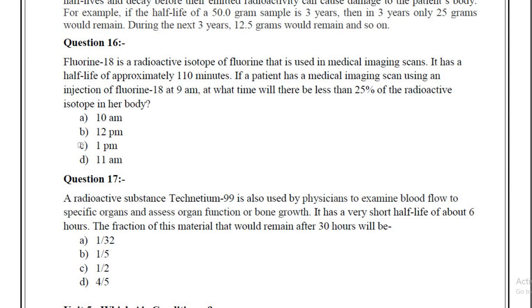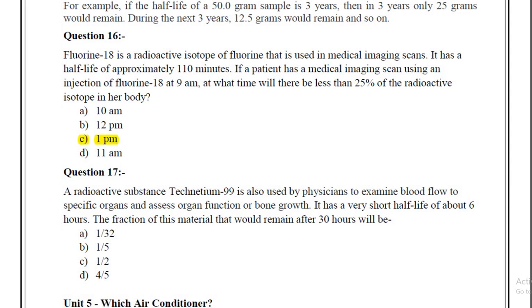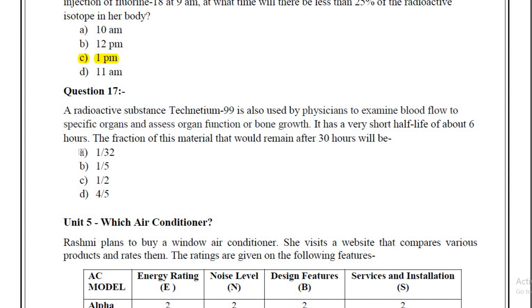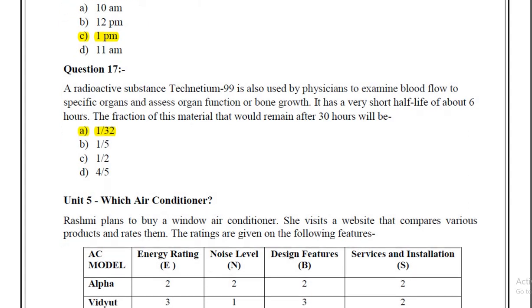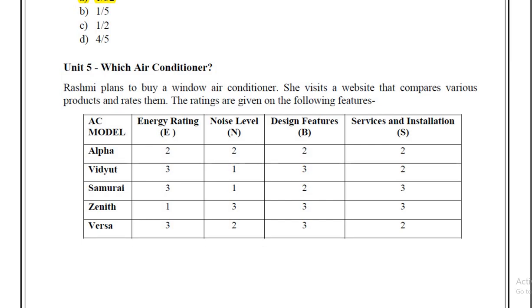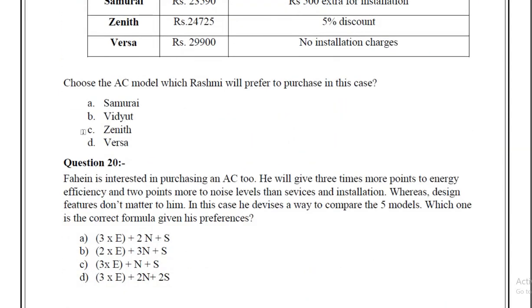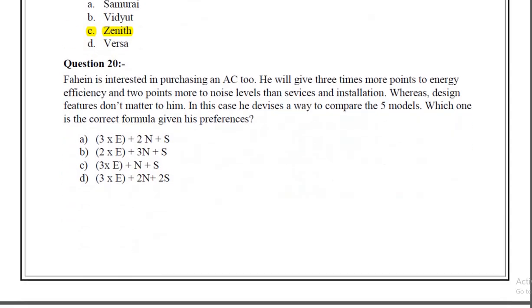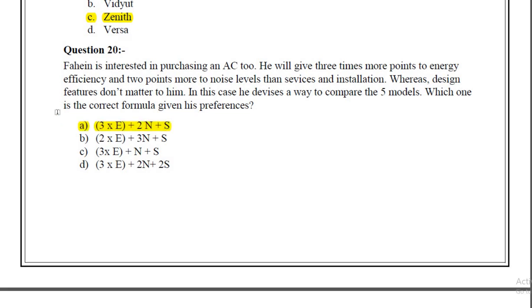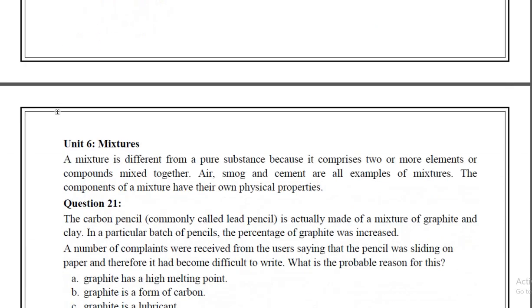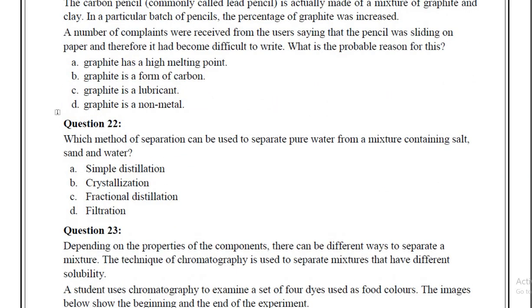For question number 15, the expected answer is B. Then you will move ahead to Unit 4, Half-Life of Radioisotopes. For question 16, the most expected answer is C. For question 17, the expected answer is A. For Unit 5, Which Air Conditioner, you will get question number 18 — the most expected answer is A. For question 19, the expected answer is C.